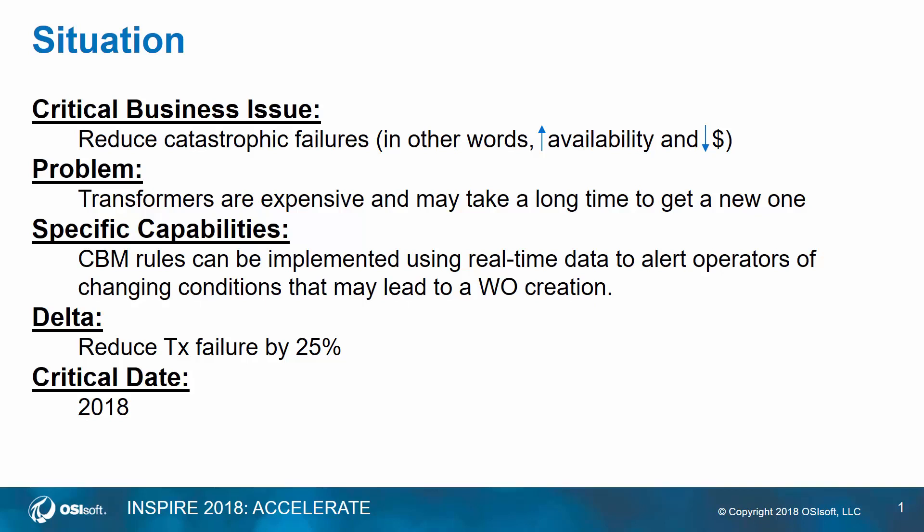As a transmission and distribution company, the customer would like to reduce catastrophic failures by increasing availability of their assets and reducing maintenance and replacement costs. Transformers are typically very expensive, and reducing failures by 25% by the end of the year will make the project successful.